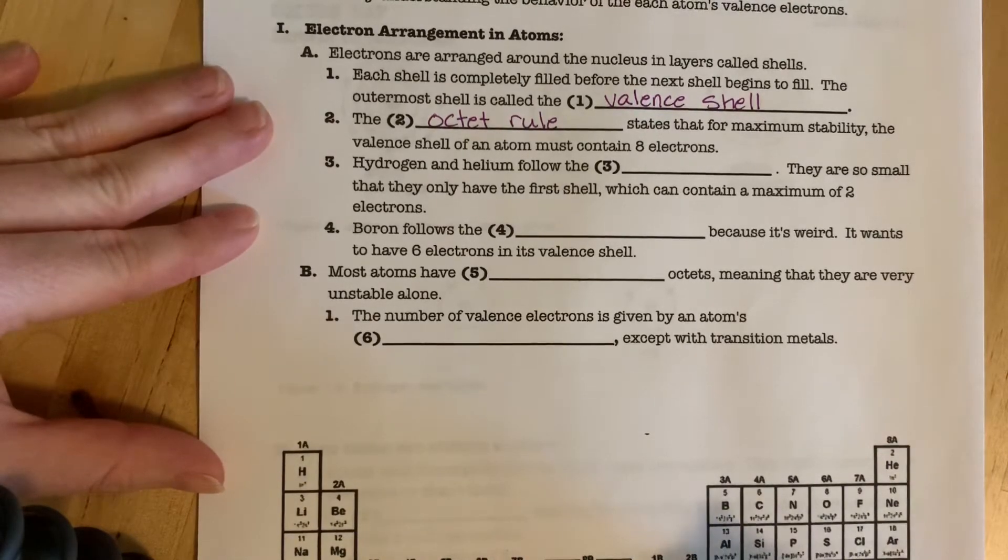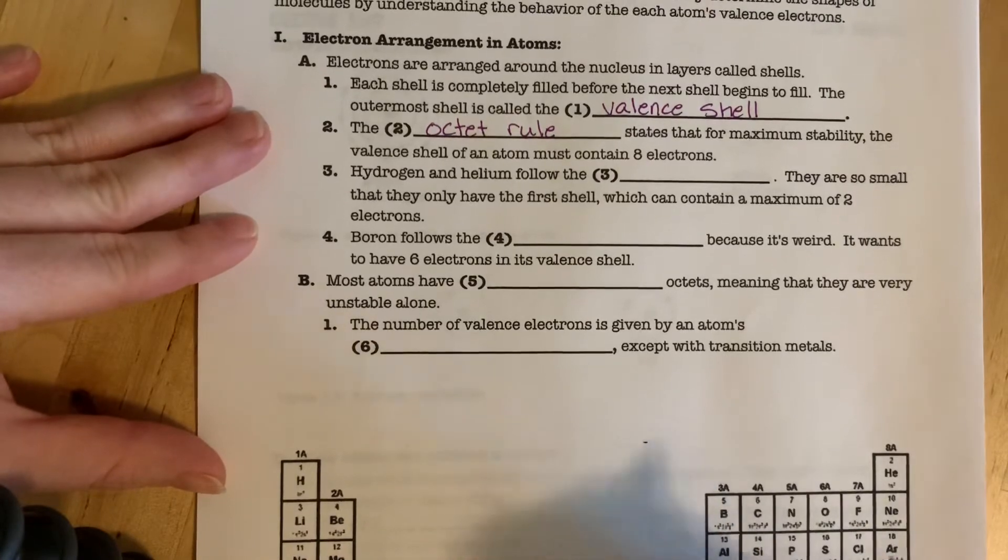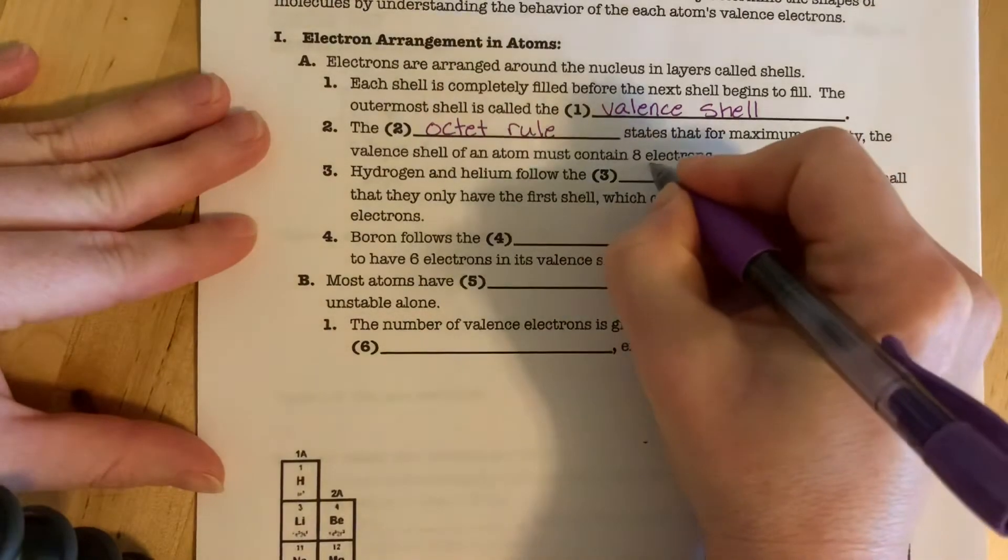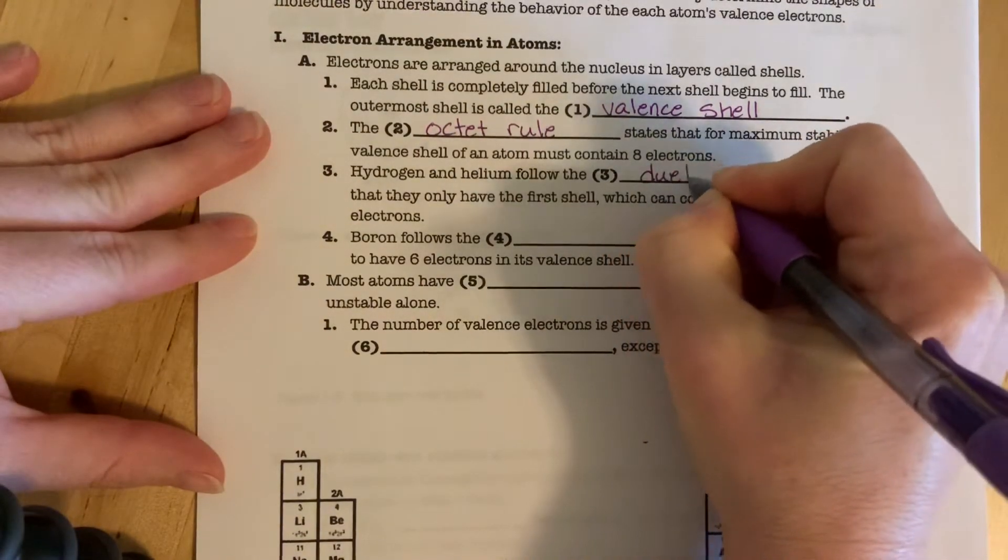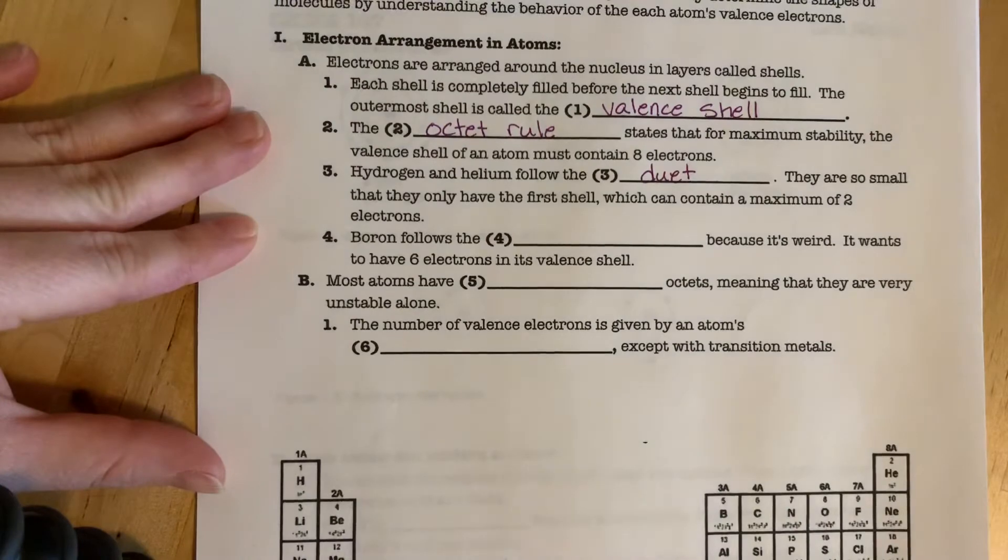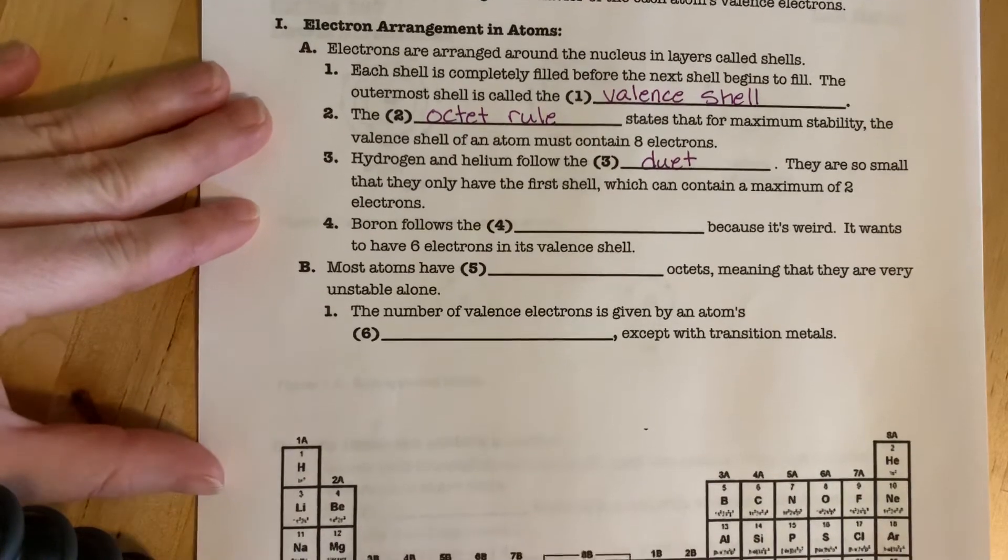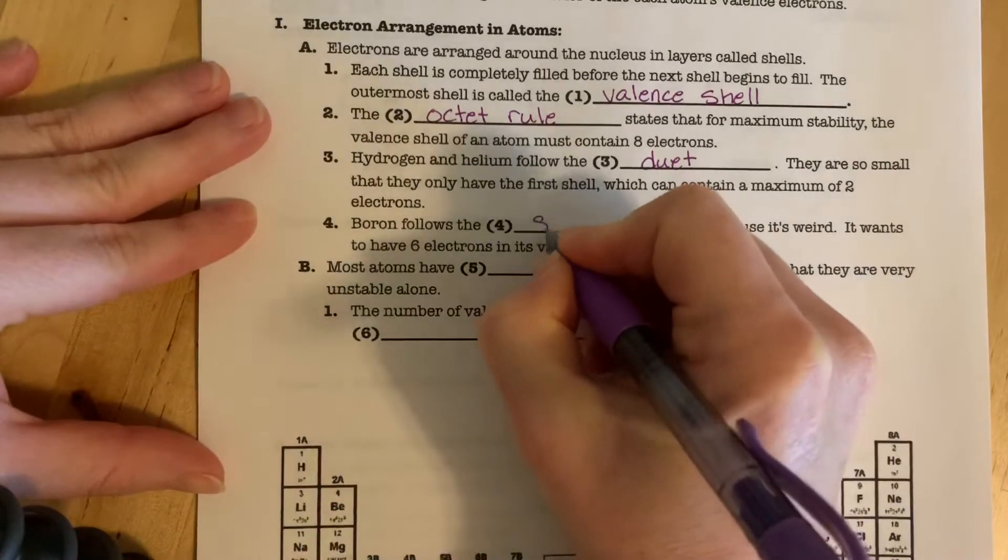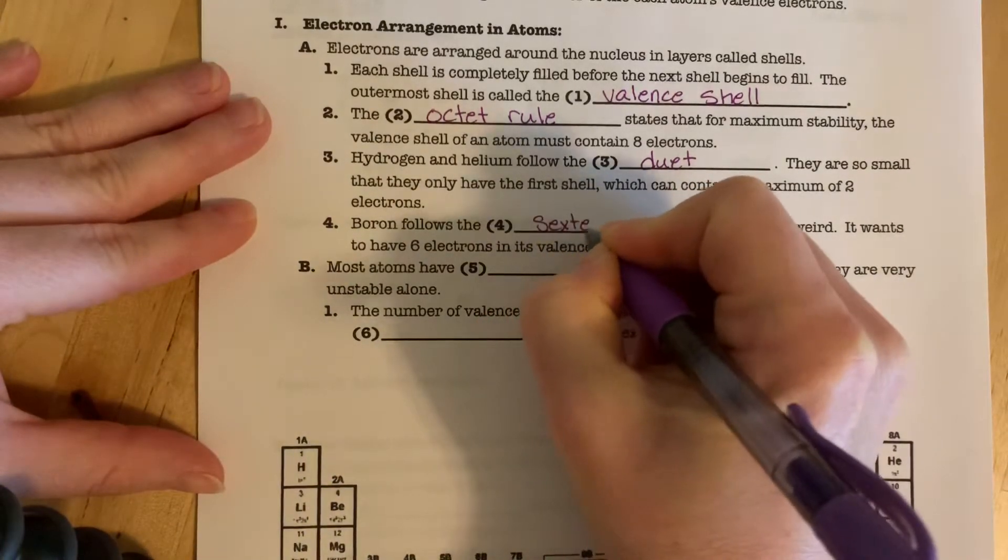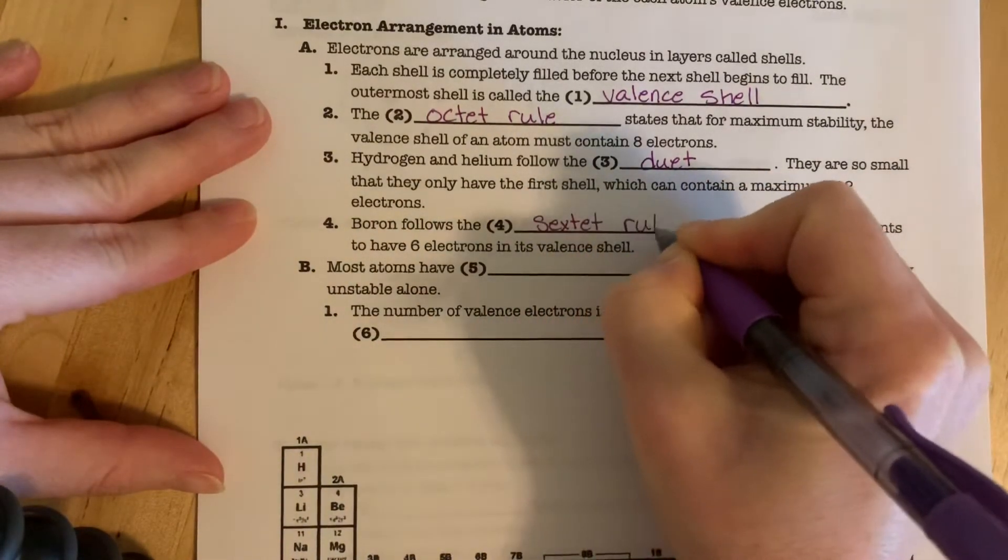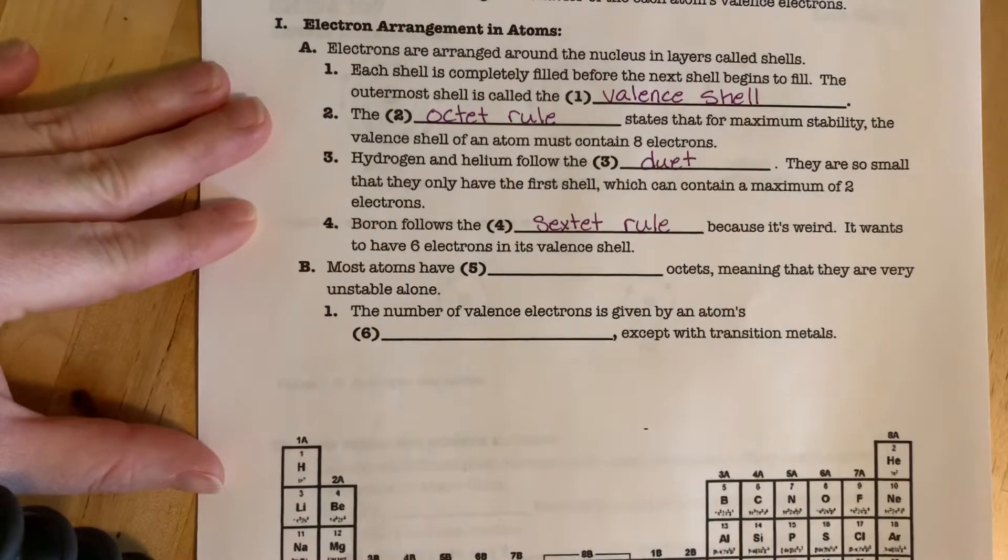There are of course exceptions to that rule. Hydrogen and helium are so small that they can't actually handle eight electrons, so they follow the duet rule. They want to have two electrons. Boron is an unusual exception. It follows the sextet rule, meaning it only wants six electrons.